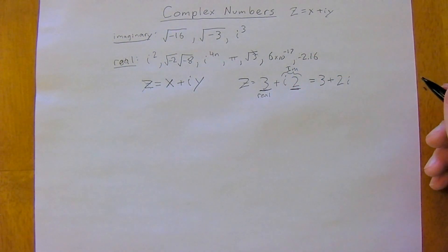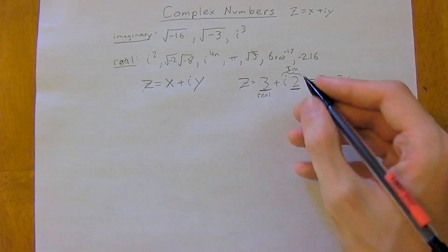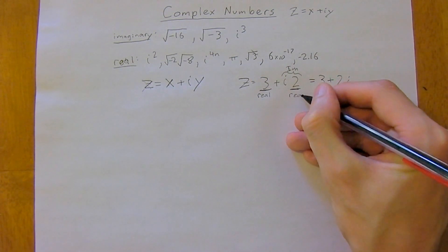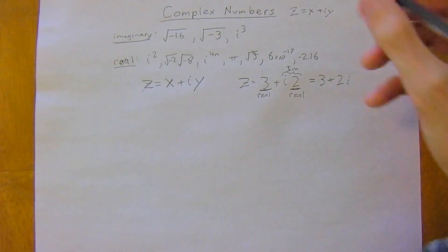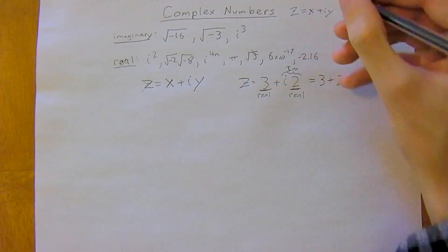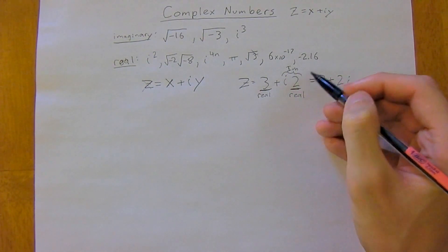But you'll notice that the imaginary part actually has a real part to it. So actually every complex number has two real numbers in it. So the 3 is real and the 2 is real, but together we call this the imaginary part of the complex number.